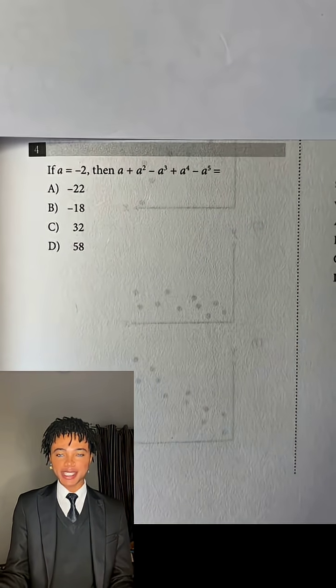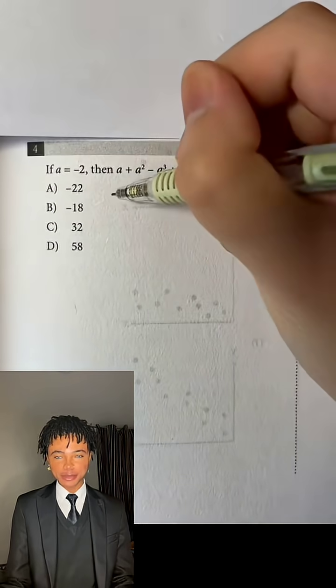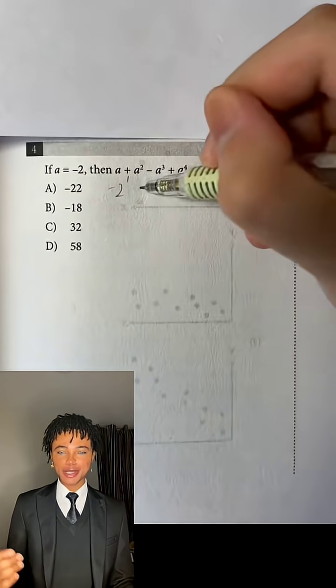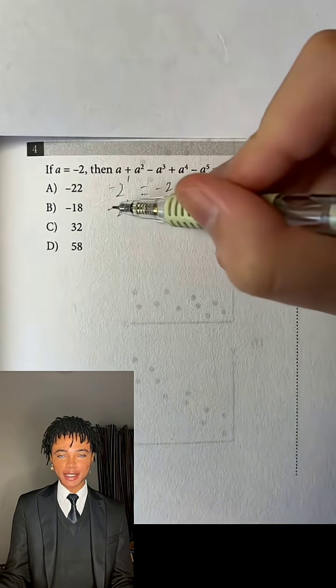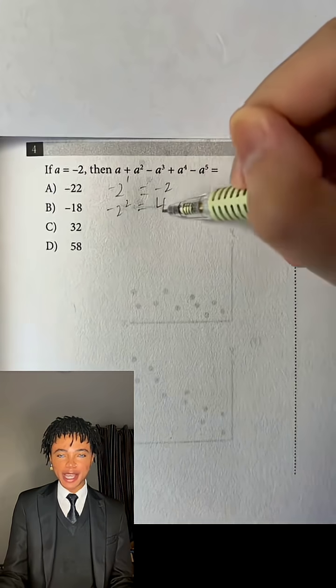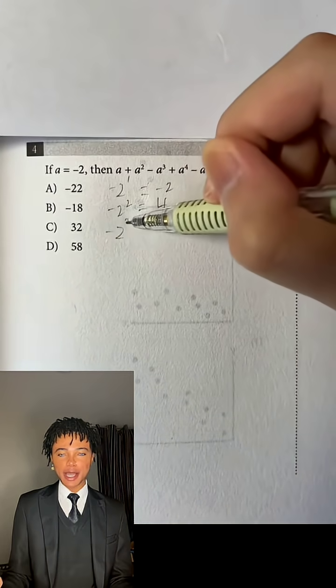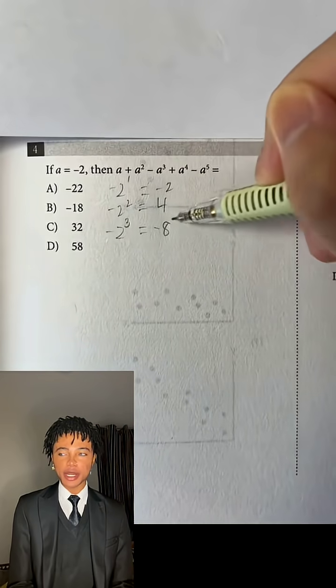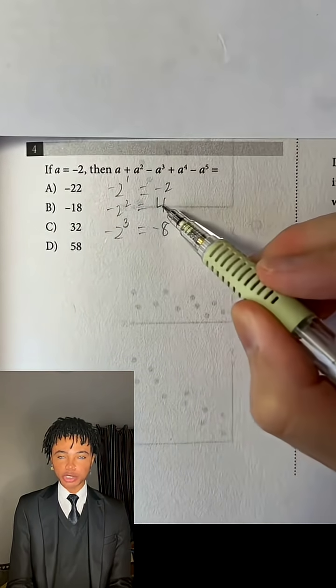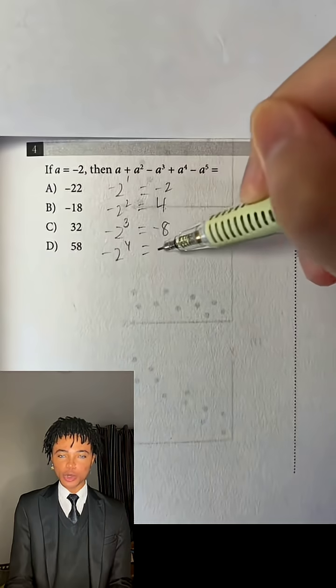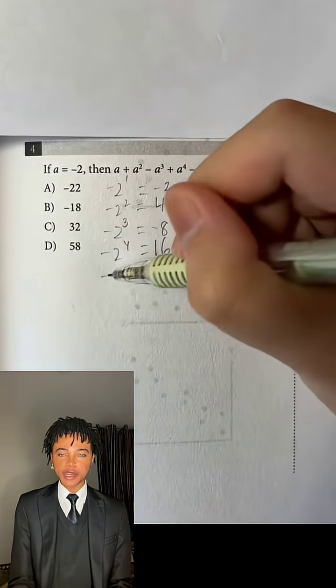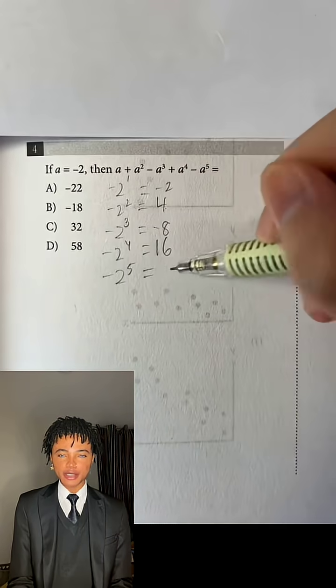So first let's write down some powers of negative 2. So negative 2 raised to the first power is just negative 2, and then negative 2 squared is equal to negative 2 times negative 2, which is positive 4, and then negative 2 raised to the fourth power is going to be equal to positive 16, and then negative 2 raised to the fifth power is going to be equal to negative 32.